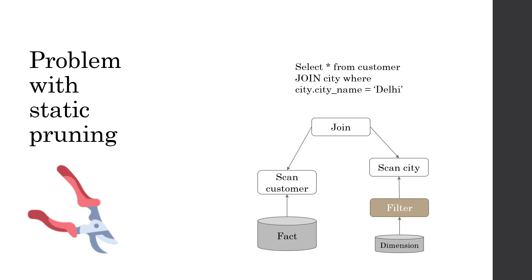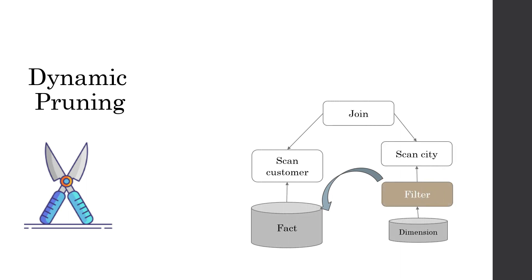In most join cases where the where clause is on a smaller table, this kind of static partition pruning will not work. Now let us look at the example of dynamic pruning. We looked at the problem where we were filtering on the smaller data set and then doing a scan and join with a bigger data set. Instead of that, what Spark does — and you can see this in Spark 3 and 3.3 where they have enhanced on this — is use dynamic pruning to optimize the way our queries work.